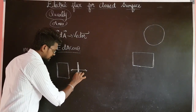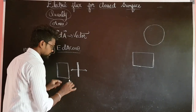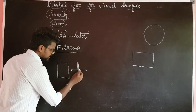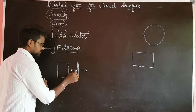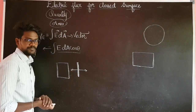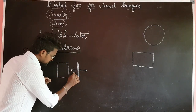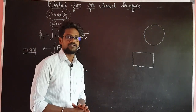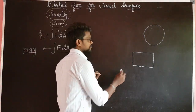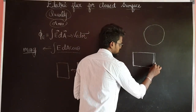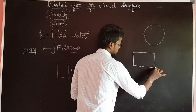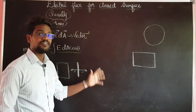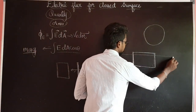In each area, the area vector is perpendicular to that surface — it points in the outward normal direction. In this object there will be a number of electric field lines passing through.